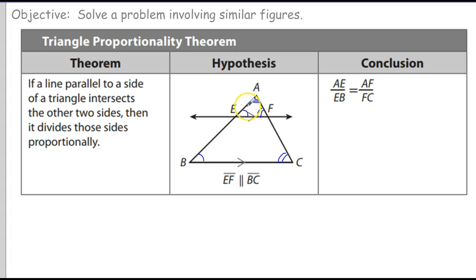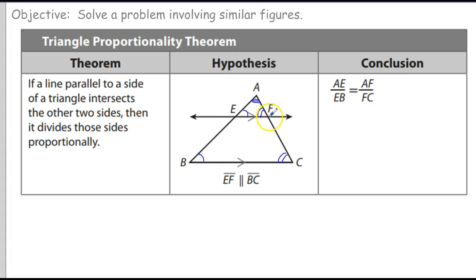So both triangles have to be similar by the angle-angle theorem — angle 3, angle 1, angle 2 for each. So if that's true, that means side AE is proportional to AB, and AF is in the same proportion to AC as EF is to BC.